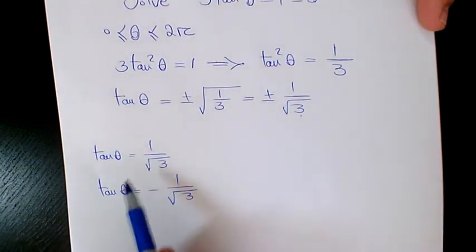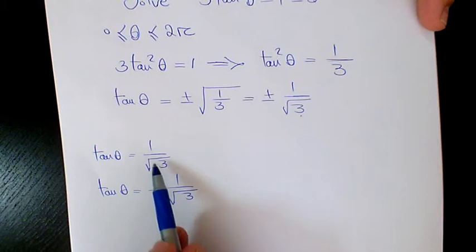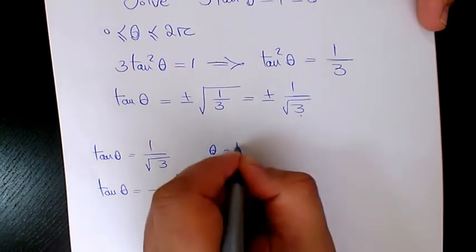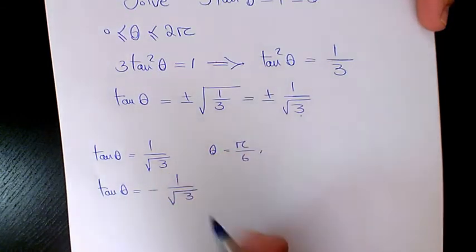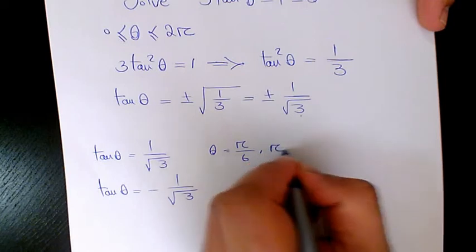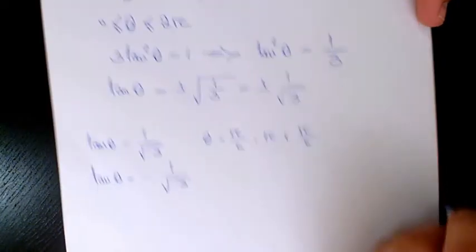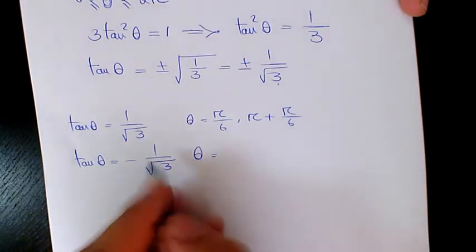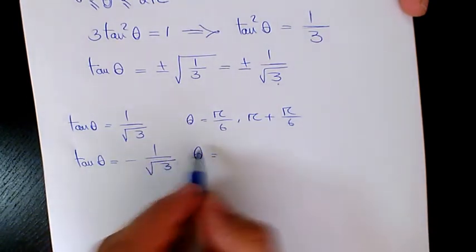We know tan pi over 6 is going to be 1 over root 3, so theta is going to be pi over 6. Since tan is positive in both quadrants 1 and quadrant 3, it's going to be pi plus pi over 6.